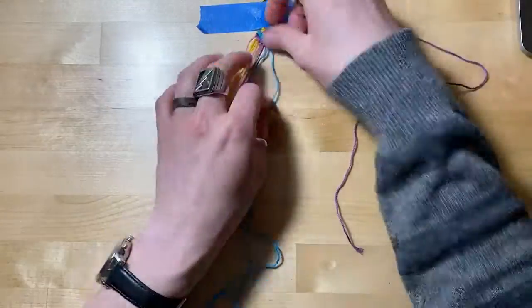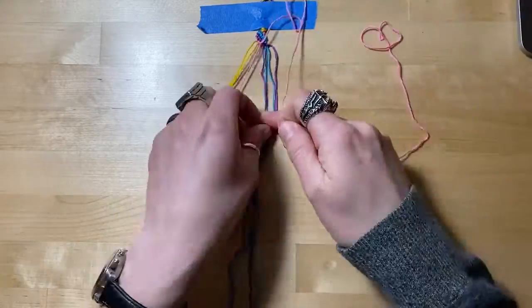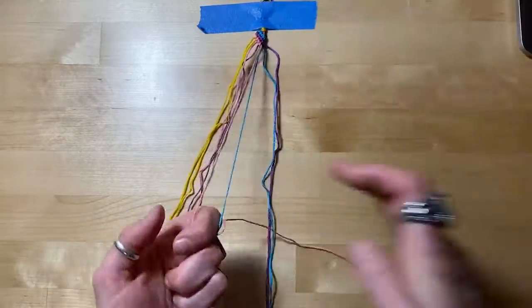You can already see how it's starting to make stripes sort of at a diagonal angle, which is a really nice look.